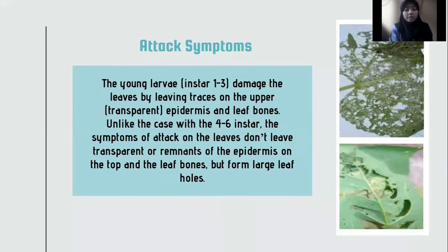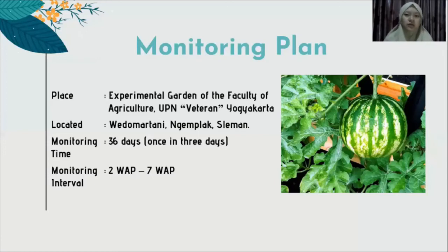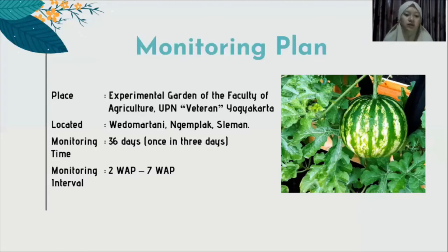The monitoring will be held in the experimental garden of the Faculty of Agriculture, UPN Veteran Yogyakarta, located in Wedomartani, Ngemplak, Sleman, Yogyakarta. The monitoring period chosen is 36 days, conducted once every three days, giving 12 times of observation. The monitoring interval chosen is from two weeks after planting until seven weeks after planting.